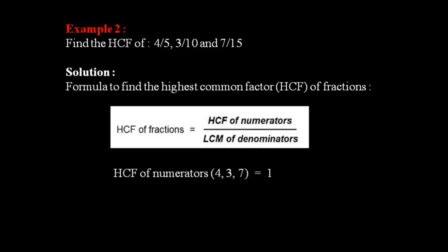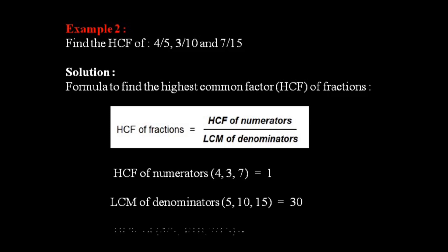The HCF of 4, 3, and 7 is 1. Then we find the LCM of the denominators 5, 10, and 15, which is 30. Putting the values into the formula, the HCF is equal to 1 by 30.